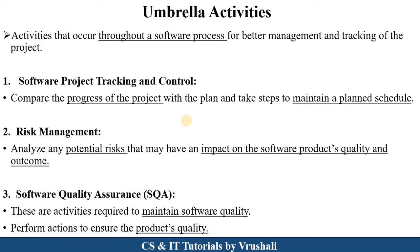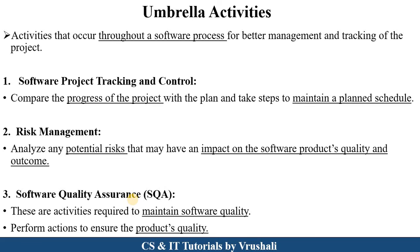Tracking and control of all these things is maintained in this activity. The second umbrella activity is risk management. There are potential risks involved in a particular software project, and it is necessary that these risks do not impact the software product quality and outcome — this is monitored in the risk management activity. The next is software quality assurance, which maintains the software or product quality, including time complexity, space complexity, and overall product quality.